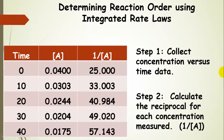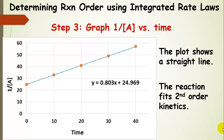This table looks very similar to what we looked at for a first order process. We collect concentration data for different times. To check if the process is second order, we take 1 divided by the concentration of A at each time — so 1 divided by 0.0400 gives us 25.000 — and do that for all concentrations at all the various times. Then we plot those inverse concentrations versus time. If we get a straight line, which in this case we did, then the reaction fits second order kinetics.